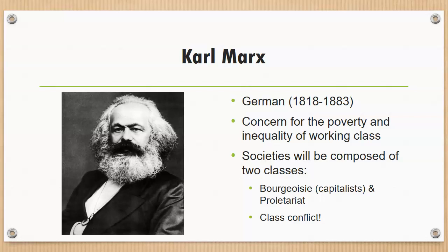Marx identified several social classes in 19th century industrial society and predicted that eventually all industrial societies would have only two: the bourgeoisie and the proletariat. The bourgeoisie owned the means of producing wealth — the factories, equipment, and other capital — so he also called them capitalists. The proletariat were the workers, paid by the bourgeoisie only enough to stay alive. He said the key to unfolding history was an inevitable class conflict between the two, just as slaves overthrew slave owners. Wage workers would overthrow the capitalists, and out of this conflict would emerge a classless, communist society — one with no powerless proletariat and no powerful capitalists, where everybody would be treated the same.